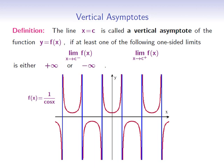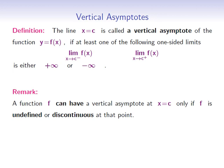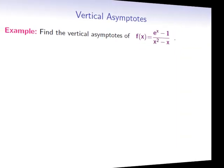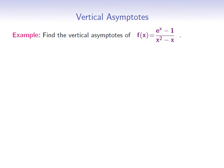So how can we find vertical asymptotes? A function f can have a vertical asymptote at x equals c only if f is undefined or discontinuous at that point. This remark will help us identify the x values at which f might have a vertical asymptote. Find the vertical asymptotes of f of x equals e to the x minus 1, divided by x squared minus x.